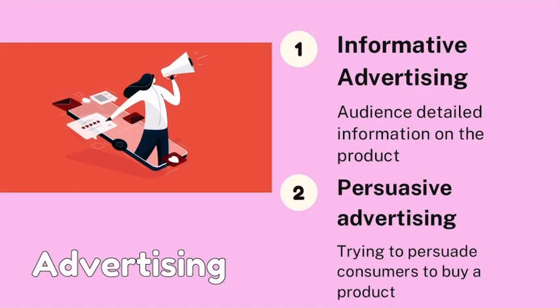Now, let's look at the two types of advertising. First is informative advertising — this is when the audience is given detailed information on the product, so the main purpose is to inform customers about the product. Second is persuasive advertising — this is when the advertisement is trying to persuade consumers to buy the product, not just informing them but attracting them to purchase.